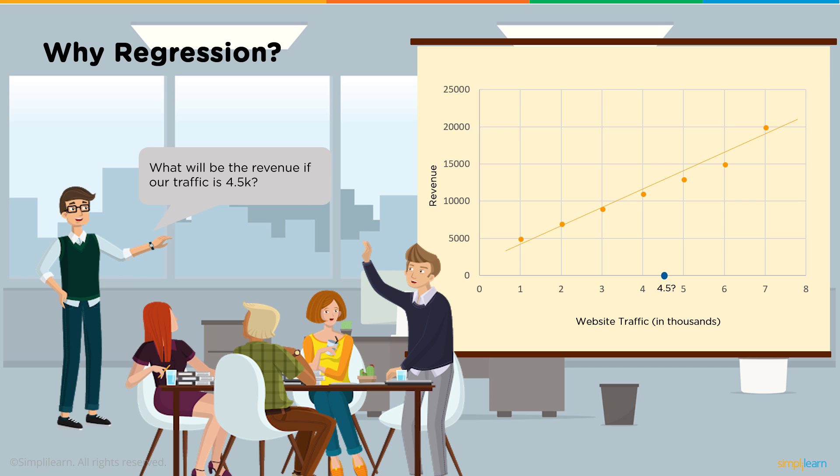And then, we could use that line as a predictor line. So, for example, what will revenue be if our traffic is 4.5K? And we see that when the traffic is around 4,500, the revenue is around 13,000. And if we could draw a perpendicular line from 4.5K on the x-axis, the traffic axis, up to the orange regression line, sometimes called the line of best fit, then we could draw another line over to the y-axis, the revenue axis, and we could see where it lands. And that would be the prediction. So, in this example, when the traffic is around 45,000 hits, the predicted revenue is around 13,000.